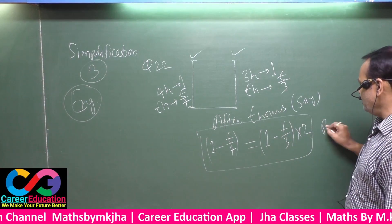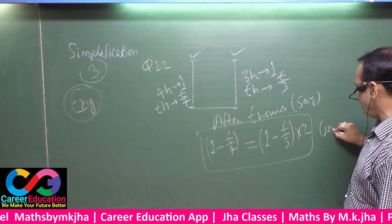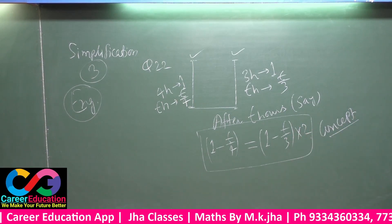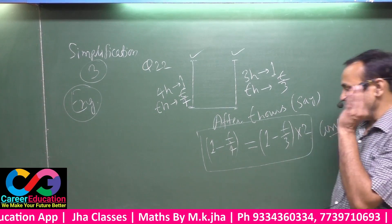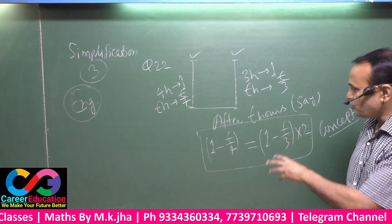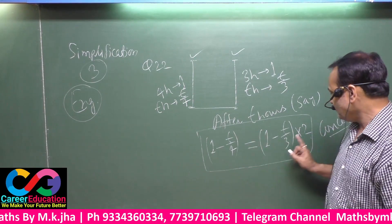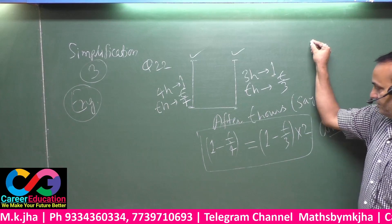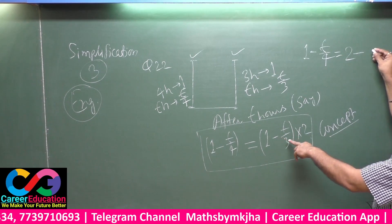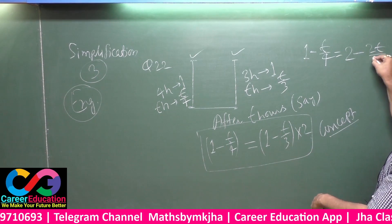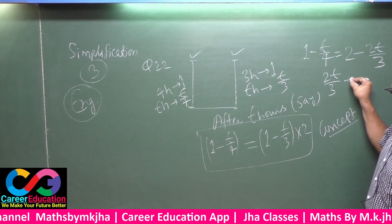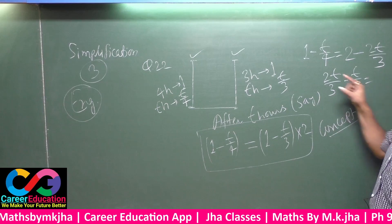According to the question, after t hours the remaining length of the first candle will be just double the remaining length of the second candle. That means there will be a sign of equality. You have to solve for the value of t. This is the concept of this question. Setting up the equation: one minus t by four equals two times one minus t by three, which gives two t by three minus t by four equals one.